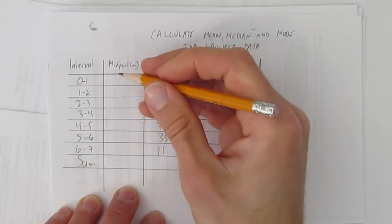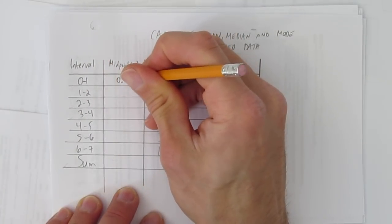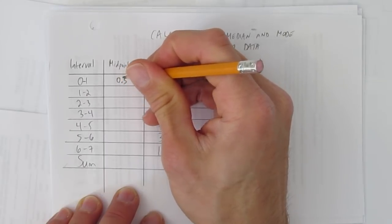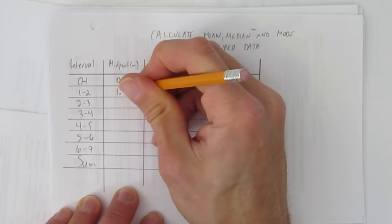Let's start by finding the midpoints. What's the midpoint of 0 and 1? You just add them together, 0 plus 1, and divide by 2, you get 0.5. Same thing with the next one. The midpoint is 1 plus 2, divided by 2, which is 1.5.